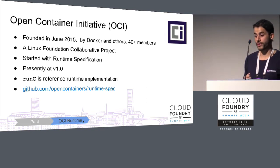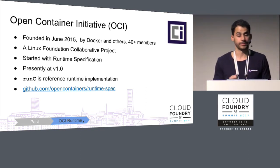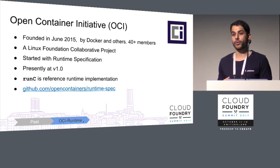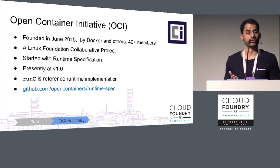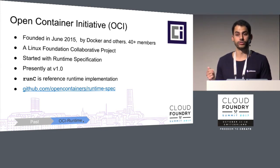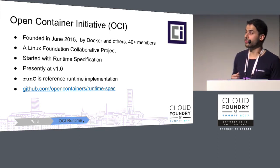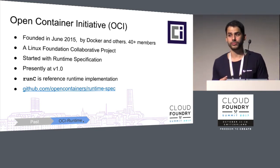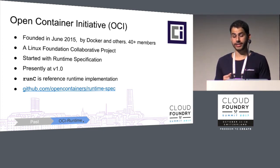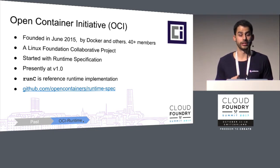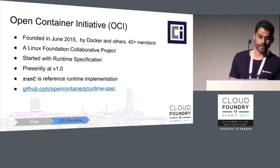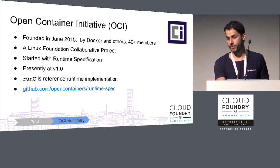OCI was founded in June 2015 by Docker and 40 other members. It's a Linux Foundation collaborative project. It started with a runtime specification, which defines the lifecycle of a container — how you start, delete, and kill a container — and the environment including namespaces, volumes, and networking. After two years, in June 2017, it came to the first stable version. Runc is the reference implementation of the runtime specification that was donated by Docker. The GitHub repository is available if you would like more information.